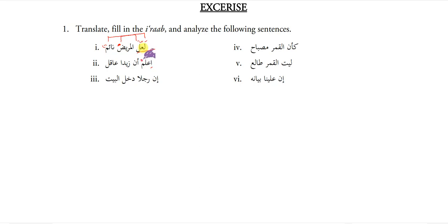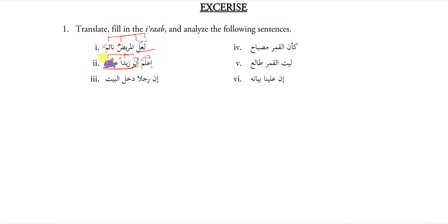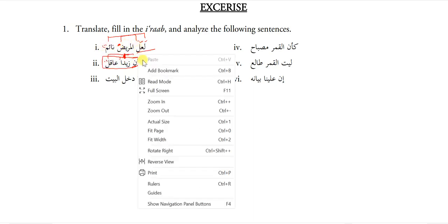A'alam — it's an Amr waahid muzakkar, meaning 'you should know.' Anna Zayidan — after Anna there must be Fathah — Aqilun. You should know that Zayd is an intelligent person. I'lam: fail. Anna: huruf-e-mushabbabil fail. Zayidan: ism of Anna. Aqilun: khabar of Anna. After becoming ism and khabar, this whole sentence becomes the mafool of I'lam.